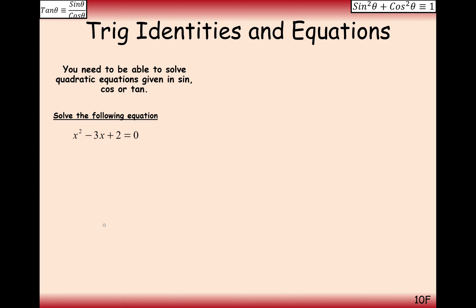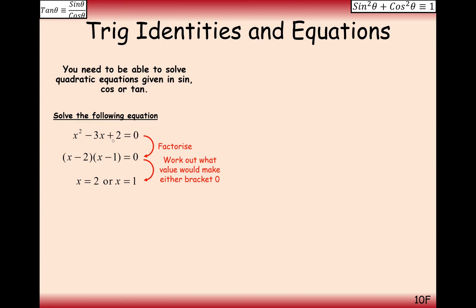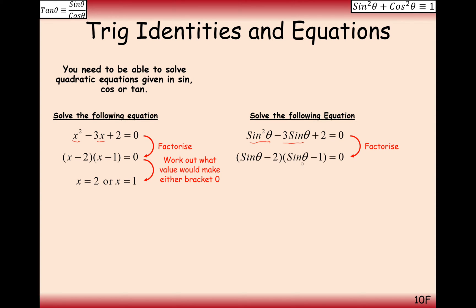We're going to look at how we might solve a quadratic trigonometric equation. Just a reminder of how we solve a normal quadratic: we factorise first and then find our x values. The same thing works here with sine squared minus 3 sine plus 2 — we just factorise using sines instead of x's, giving (sine minus 2)(sine minus 1).